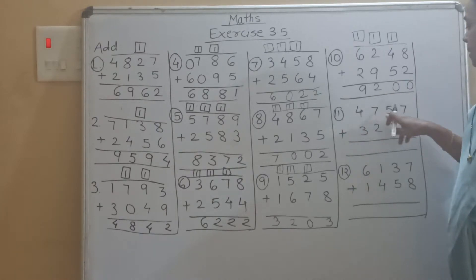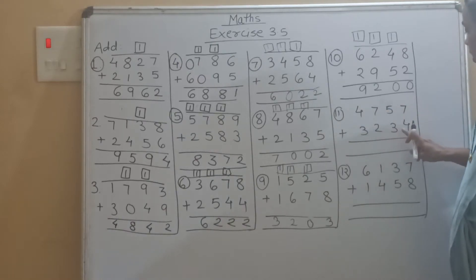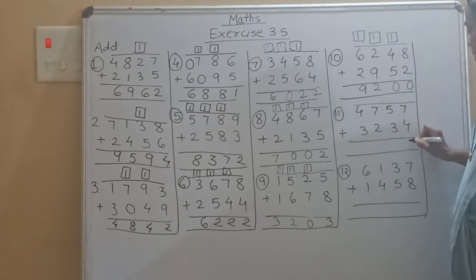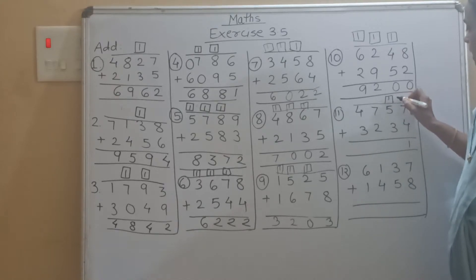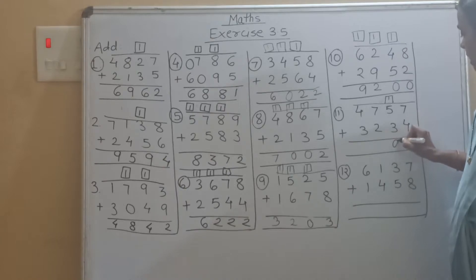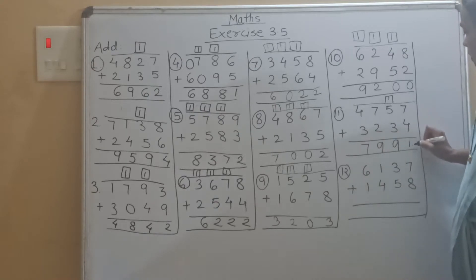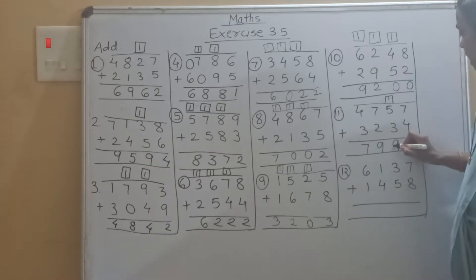The next example is 4757 plus 3234. So 7 plus 4 is 11, carry 1. Then 5 plus 1 is 6, 6 plus 3 is 9, 7 plus 2 is 9, 4 plus 3 is 7. So our answer is 7991.